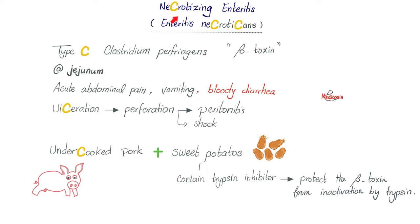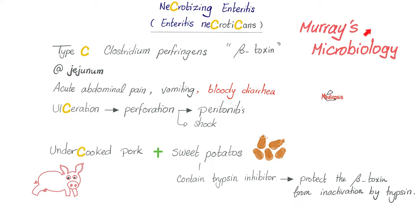Another disease is necrotizing enterocolitis — but this presents with bloody diarrhea. The bacteria is again Clostridium perfringens, but Type C this time. The toxin is the beta toxin — second letter in the Greek alphabet, third in the English alphabet. It is found in the jejunum. Symptoms include abdominal pain, vomiting, and bloody diarrhea. It can ulcerate and perforate, causing shock and peritonitis. It is caused by eating undercooked pork with sweet potato — a dangerous combination because sweet potatoes contain a trypsin inhibitor, which inhibits your trypsin, protecting the bacterial beta toxin from inactivation. According to Murray's Medical Microbiology, this combination is common in some cultures, such as the peoples of Papua New Guinea, where many cases of necrotizing enteritis were observed.